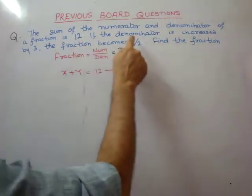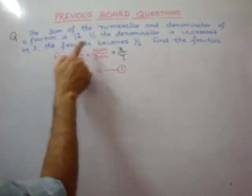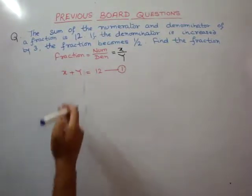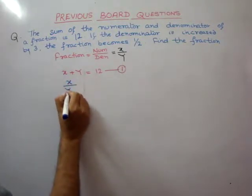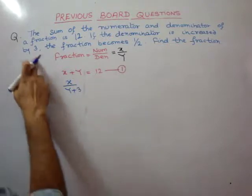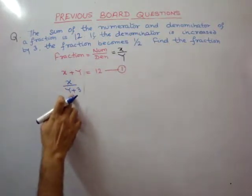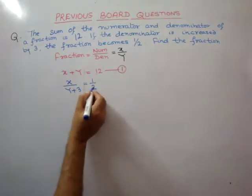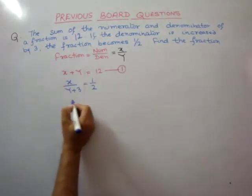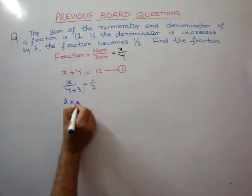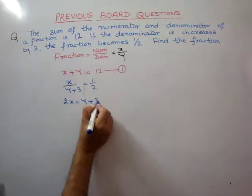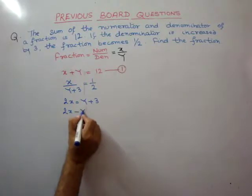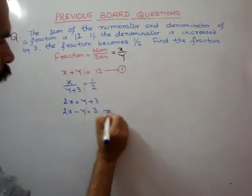Phir is nai kya kaha? If the denominator is increased by 3, the fraction becomes half. Toh hamara ho gya x by (y plus 3) is equal to 1/2. Denominator increase humnay y plus 3. Rearrange karne par hamara aa jiay gha: 2x minus y is equal to 3 — second equation.